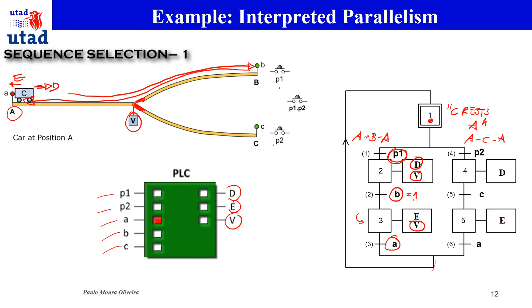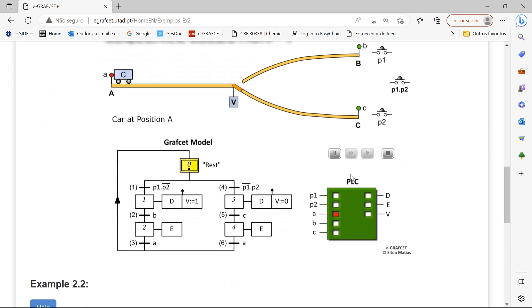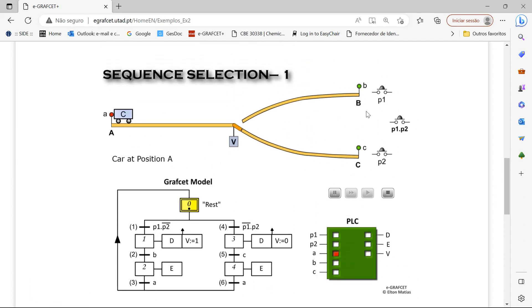We may ask: if P1 and P2 are activated at the same time, what happens? In that case, we can either have mutual exclusion between P1 and P2 or give priority to one of the sequences. Note that in this example, the action for V is a stored or memorized action rather than a continuous action, but it works with the same representation.